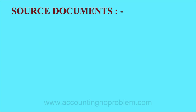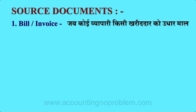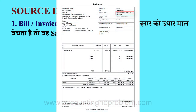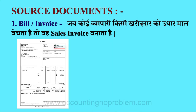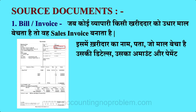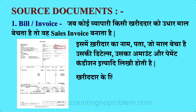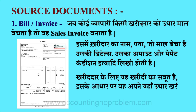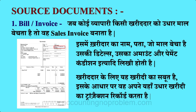इनमें सबसे पहले है Bill या Invoice। जब कोई व्यापारी किसी खरीदार को उधार माल बेचता है तो वो Sales Invoice बनाता है। नमूने के लिए हम आपको एक Bill दिखा रहे हैं। इसमें खरीदार का नाम, पता, जो माल बेचा है उसकी details, उसका Amount और Payment Condition इत्यादि लिखी होती है। खरीदार के लिए ये खरीदी का सबूत है और इसके आधार पर वो अपने यहाँ उधार खरीदी का Transaction Record करता है।